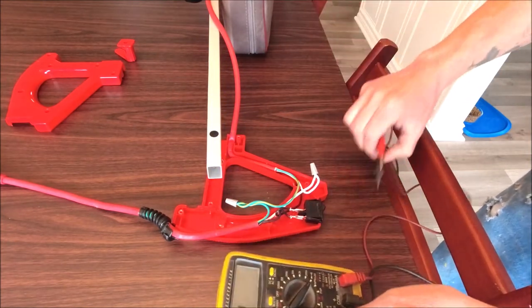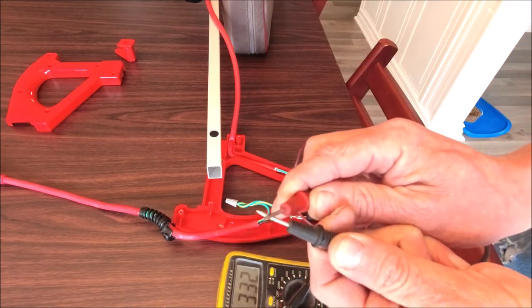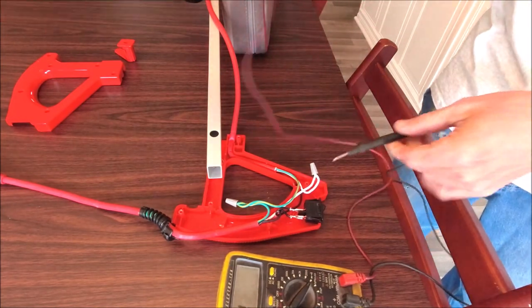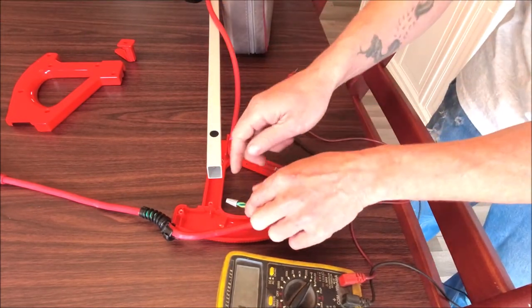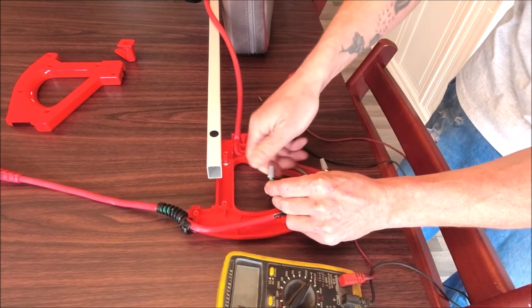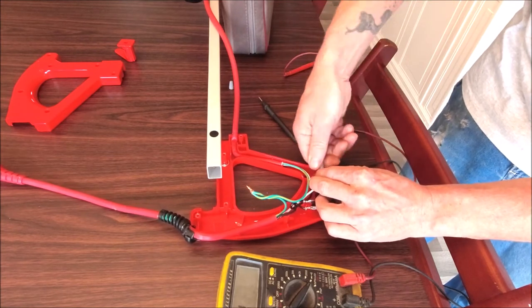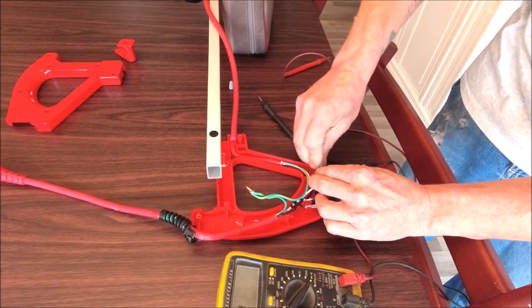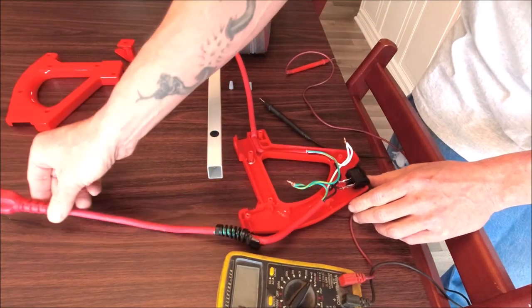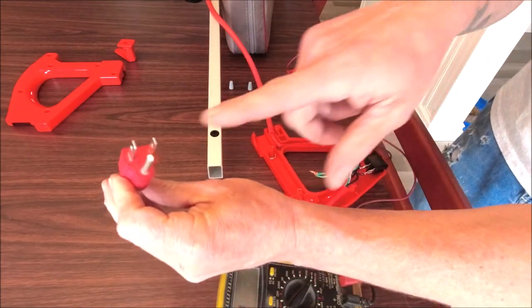What we're going to do is take our multimeter and set it to continuity. It's the setting here that looks like a little speaker. When you touch the probes together, it's going to make a beep. We're going to check these prongs and these wires here and make sure that we have continuity and don't have a break in the wire anywhere. We're going to undo the wire caps for the plug.